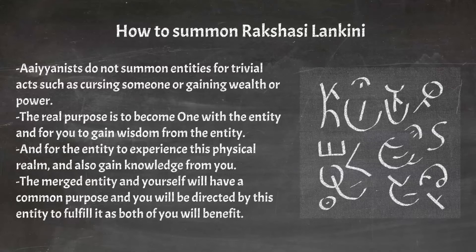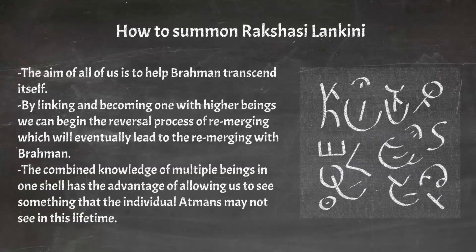The merged entity and yourself will have a common purpose, and you will be directed by this entity to fulfill it, as both of you will benefit. This could be being given or made aware of new scientific breakthroughs so that humanity will be nudged into a certain path, or creating a piece of work such as art, music, or writing that transcends humanity as it is now and pushes us humans into an area not yet explored before. Remember, the aim of all of us — lower beings, humans, and higher entities — is to help Brahman transcend itself. By linking and becoming one with higher beings, we can begin the reversal process of re-merging, which will eventually lead to re-merging with Brahman. The combined knowledge of multiple beings in one shell has the advantage of allowing us to see something that the individual may not see in this lifetime.